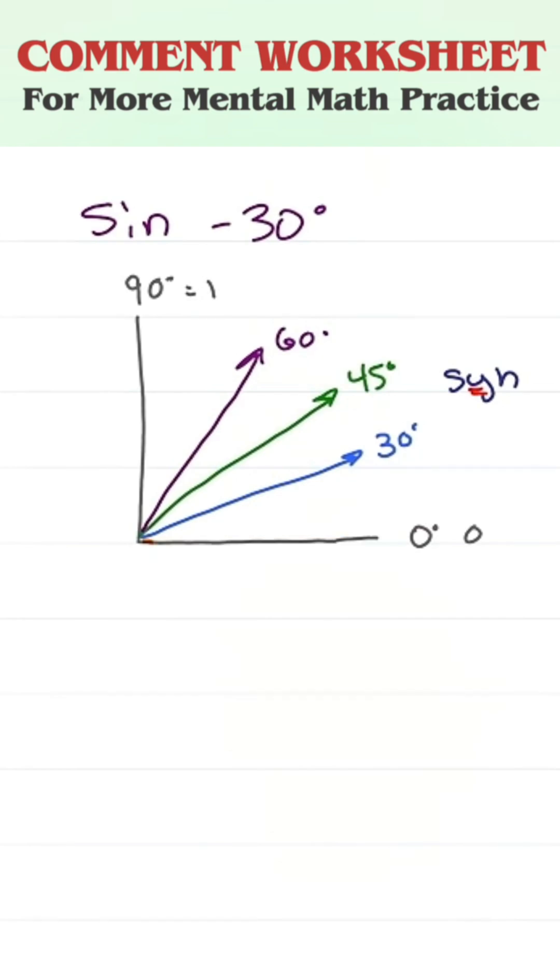I want you to imagine that you're taking this line which currently has a y value, a height of zero, and slowly raising it up from zero degrees to 30, 45, 60, and 90. And the numbers you need to memorize are 0.5, 0.7, 0.9.